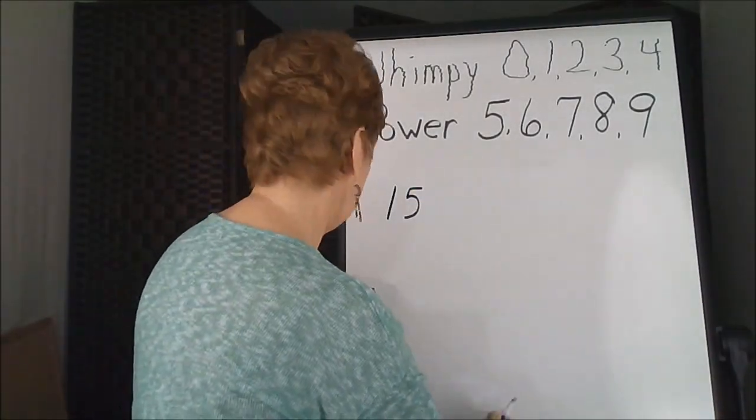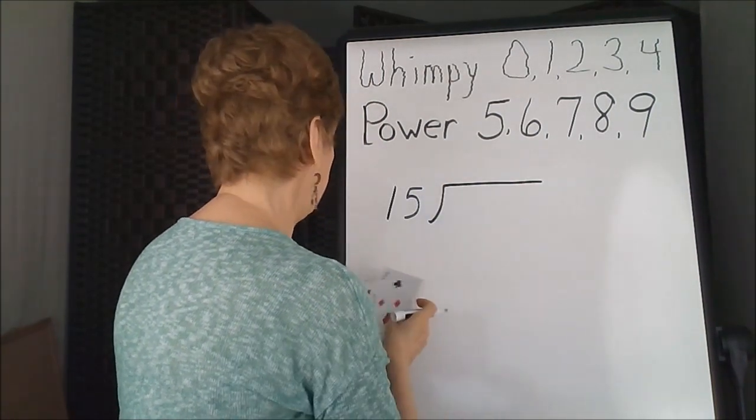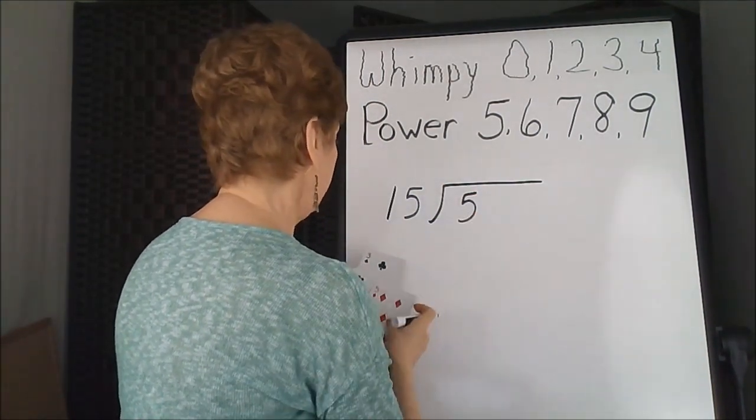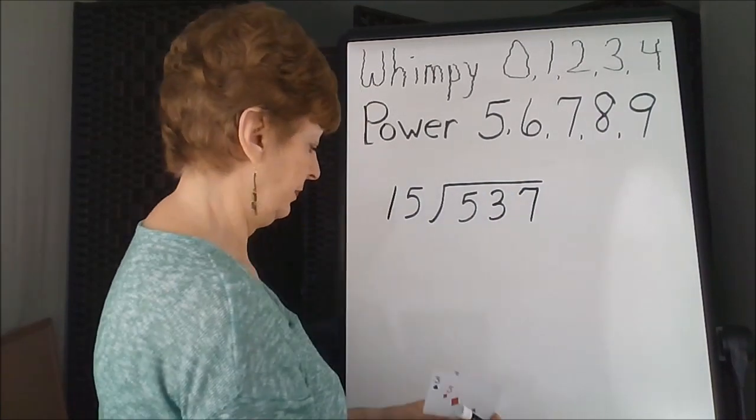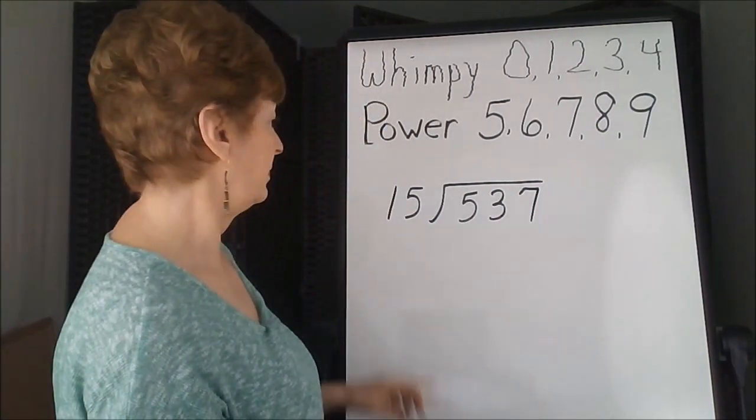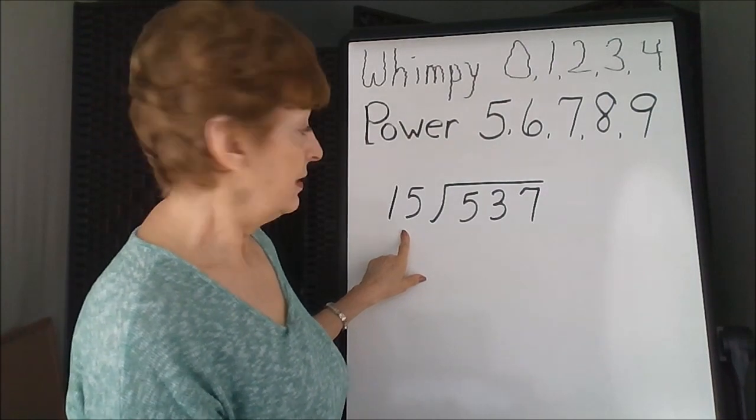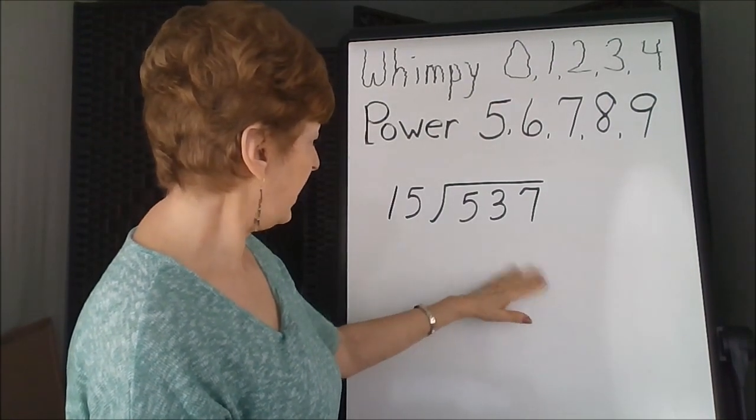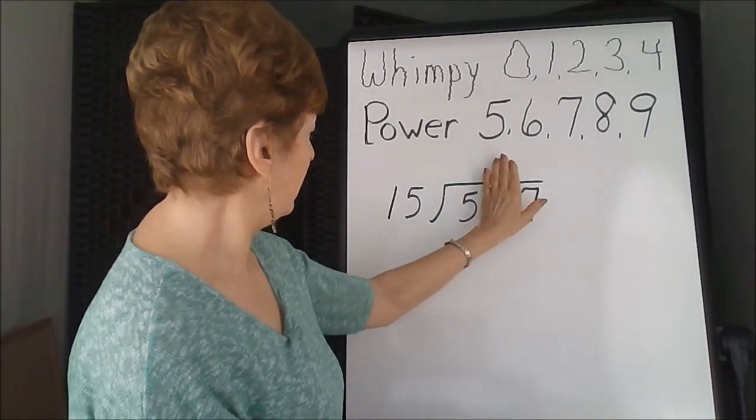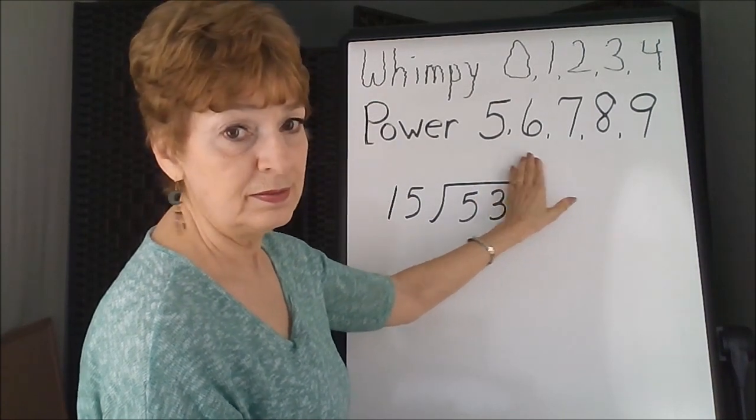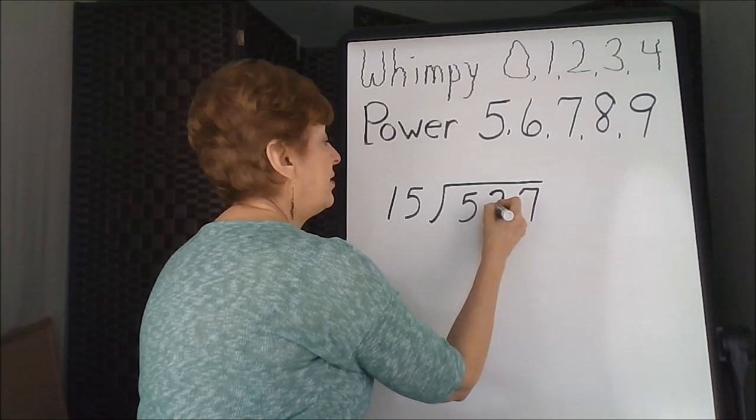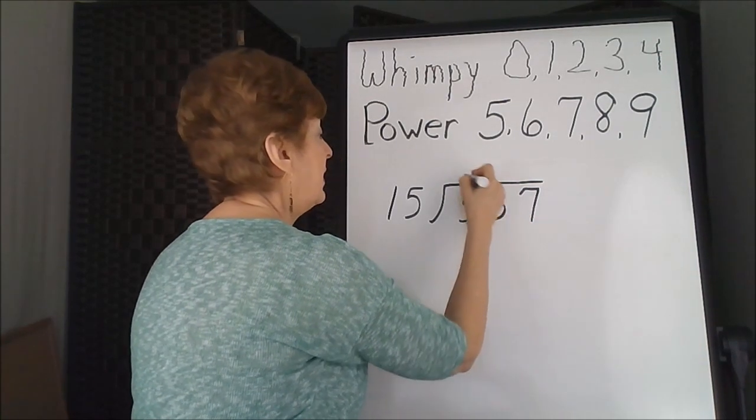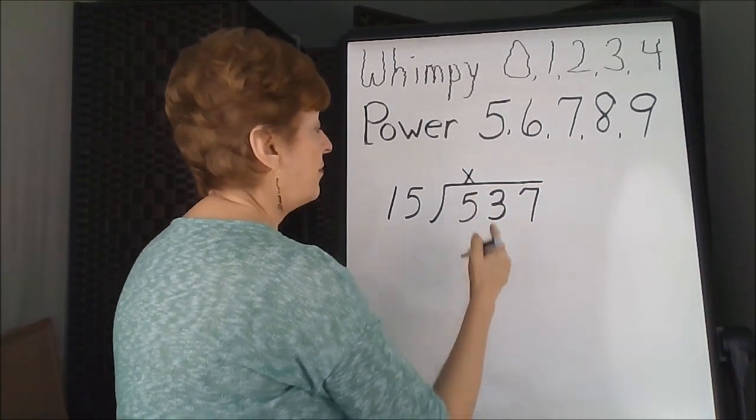How about 15 into 5, 3, 7. Let's find out where our first answer is going to go. 5 is too small, 53 is good, so that's higher, so we'll use that for our first number.